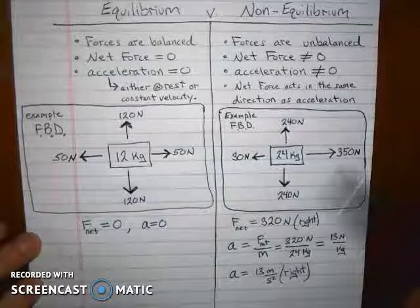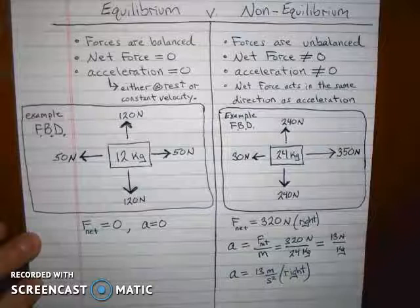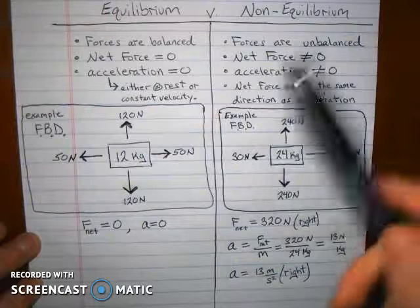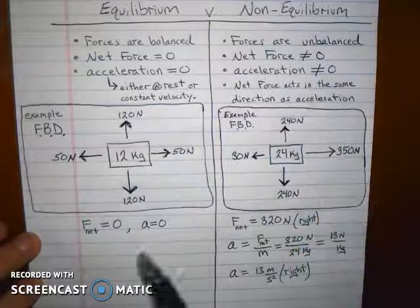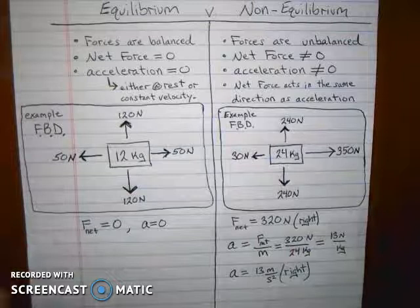If it's not in equilibrium, that means it's accelerating. Therefore, there's a force. And this is Newton's second law. A net force is required to create a net acceleration. Therefore, the forces are unbalanced. The net force is not zero. The acceleration is not zero. And the net force always acts in the same direction as the acceleration of the object.